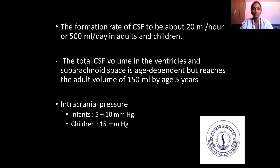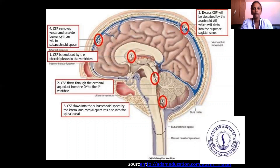Intracranial pressure is 5 to 10 mmHg in infants and 15 mmHg in children. In CSF circulation, CSF is produced by the choroid plexus in the ventricles, then flows through the cerebral aqueduct from the 3rd to 4th ventricles, then into the subarachnoid space via the lateral and medial apertures into the spinal cord. CSF removes waste and provides buoyancy, and excess CSF is absorbed by the arachnoid villi, which drain into the superior sagittal sinus.